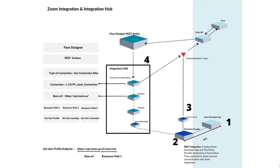Let's understand how we are going to use Integration Hub in our application. The first thing to observe is the endpoint for getting the user profile. You have the base URL — that's the first part, api.zoom.us — and then you have the resource path v2/users/me. Keep that in mind.